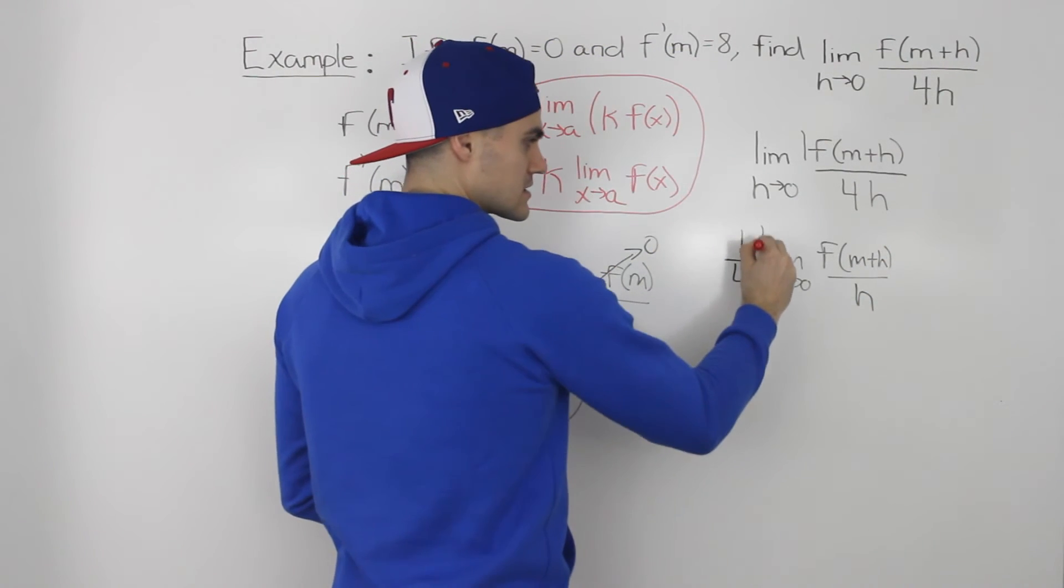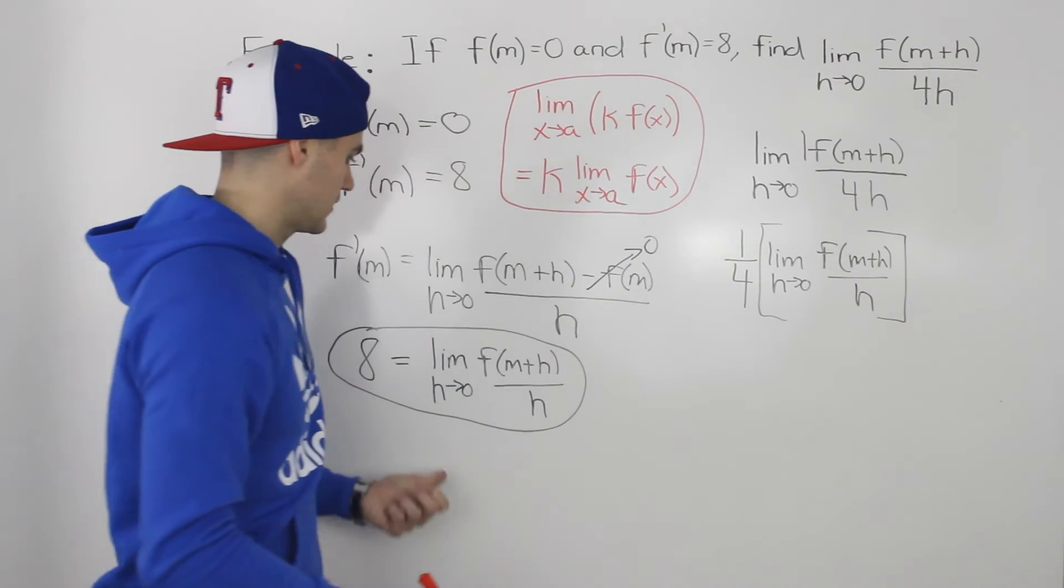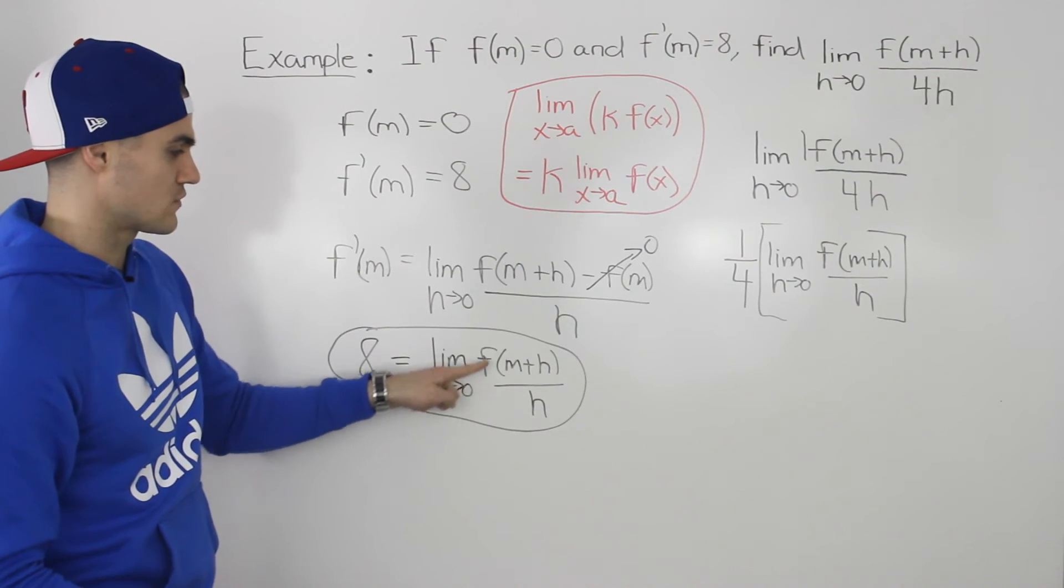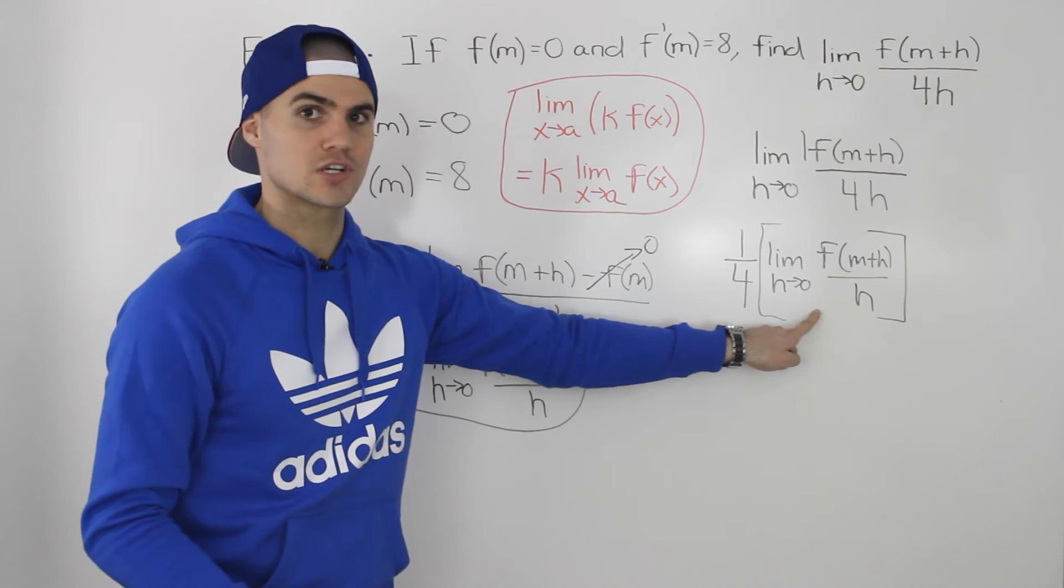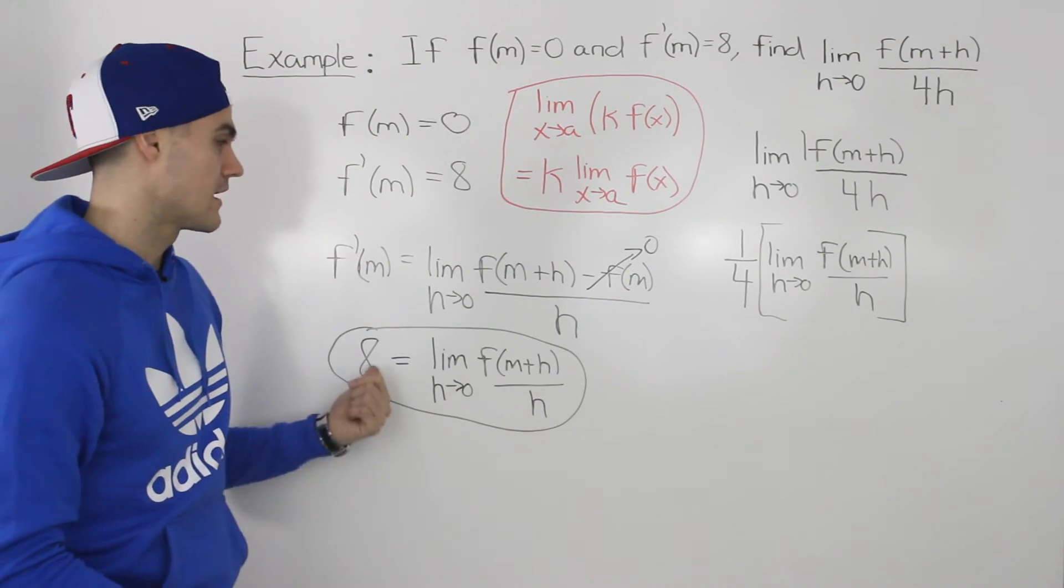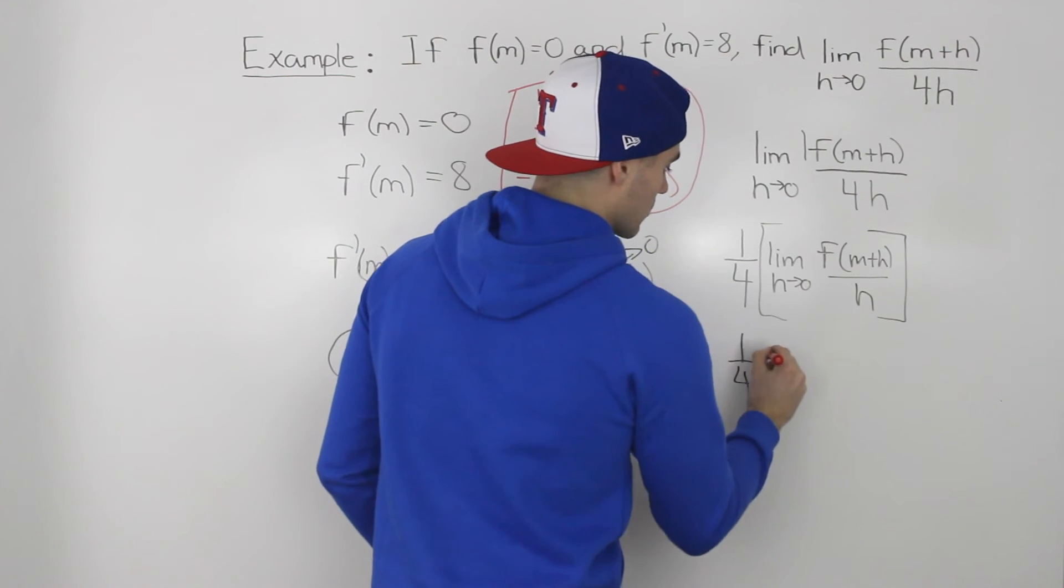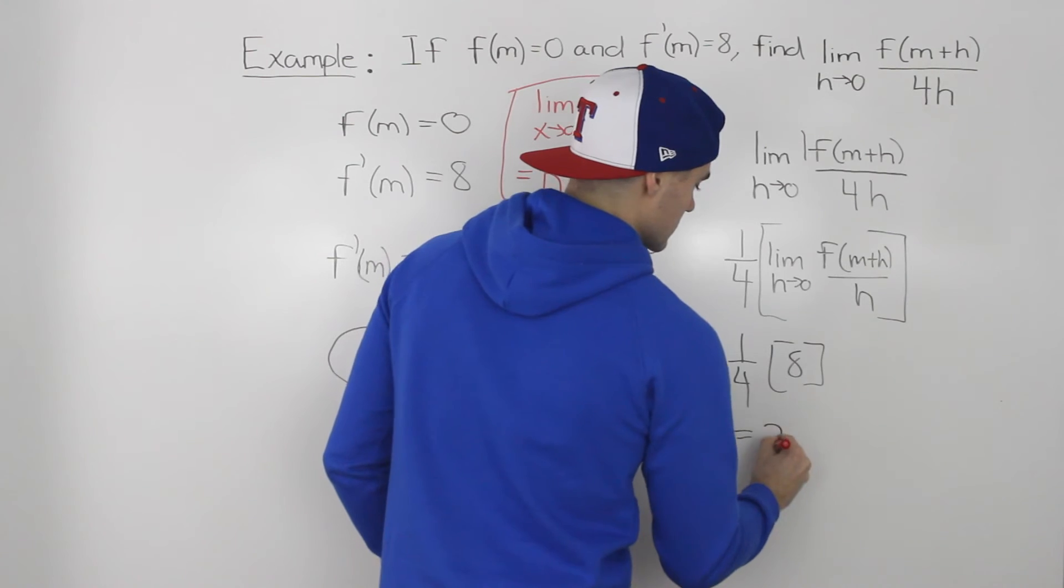And if you notice, this square bracket here is exactly what we found here. We know that that is equal to 8. The limit as h goes to 0 of f of m plus h all over h is the exact same expression as we have in the square bracket here. And that's equal to 8. So we know that this square bracket here is equal to 8. 1 over 4 times 8 just gives us 2.